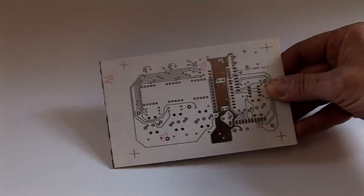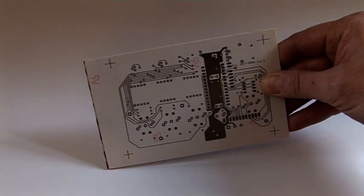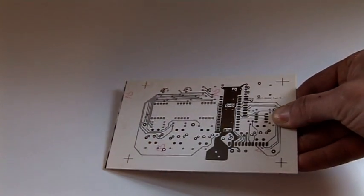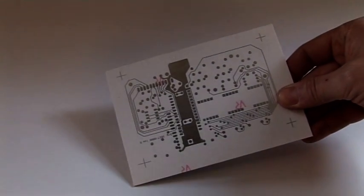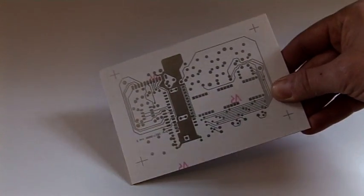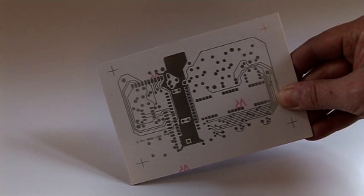Many people leave the photoresist on an etched board; it protects the copper from oxidizing and acts as a half reasonable solder flux. However, it is far better to remove the photoresist and apply a chemical tin coating to the tracks and pads of your circuit.